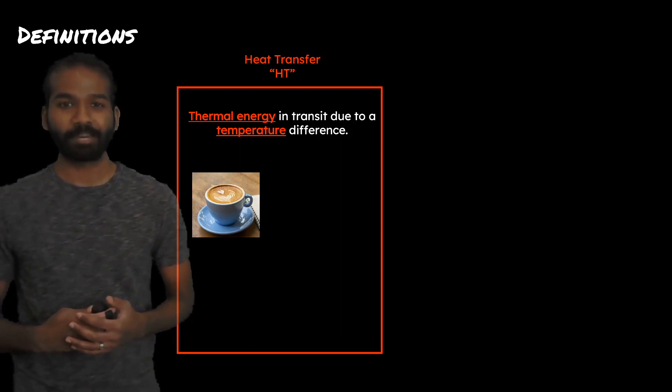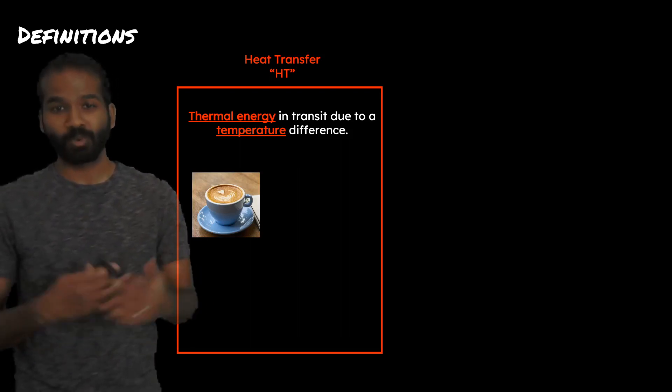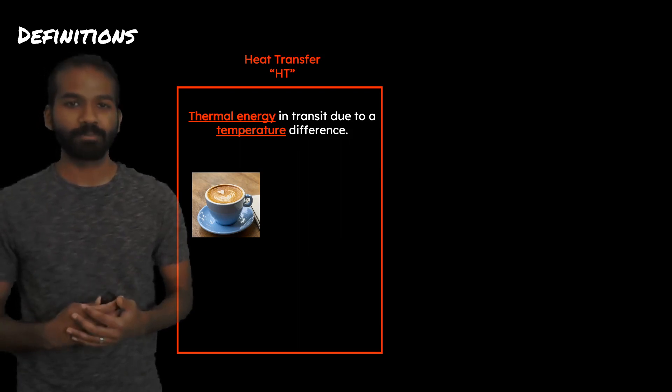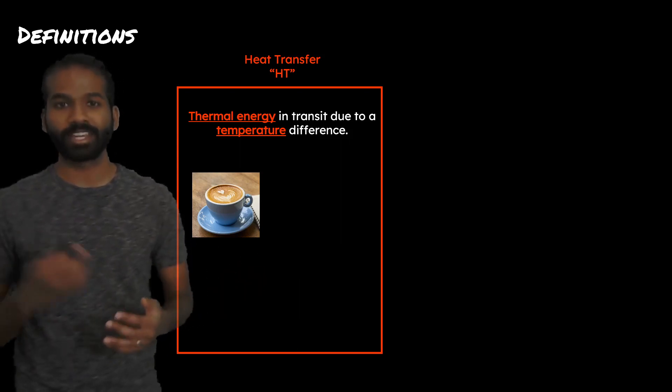Imagine a hot cup of coffee. You grab this cup of coffee and it feels warm. There is thermal energy moving from the hot coffee through the ceramic mug and into your hands. This is thermal energy in transit due to a temperature difference from the hot coffee into your colder hands.